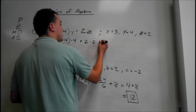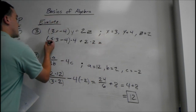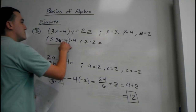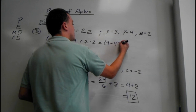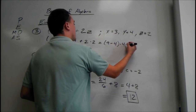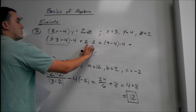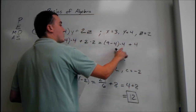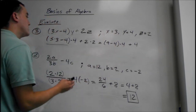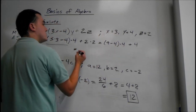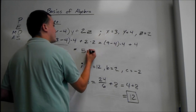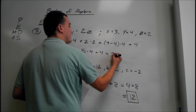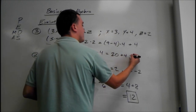Parentheses first: do everything in here before moving on. So we have 3 times 3 is 9, minus 4, times 4, plus 2 times 2 is 4. Make sure you don't add the 4 into the parentheses because it's multiplying. So 9 minus 4 is 5, giving us 5 times 4, plus 4. 5 times 4 is 20, plus 4 equals 24.